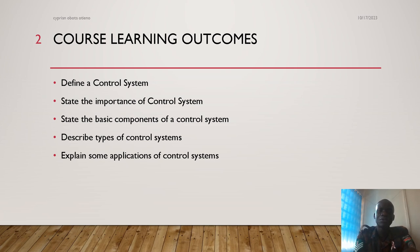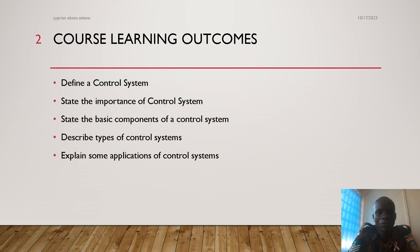The course learning outcomes will be: define a control system, state the importance of control systems, state the basic components of a control system, describe types of control systems, and explain some applications of control systems.